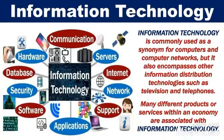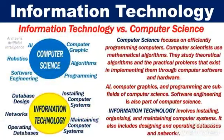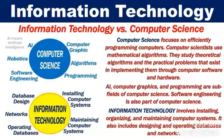What is the difference between information technology and computer science? Computer science focuses on efficiently programming computers. Computer scientists use mathematical algorithms and study theoretical algorithms and the practical problems that exist in implementing them through computer software and hardware. AI, computer graphics, and programming are subfields of computer science, and software engineering is also part of computer science.